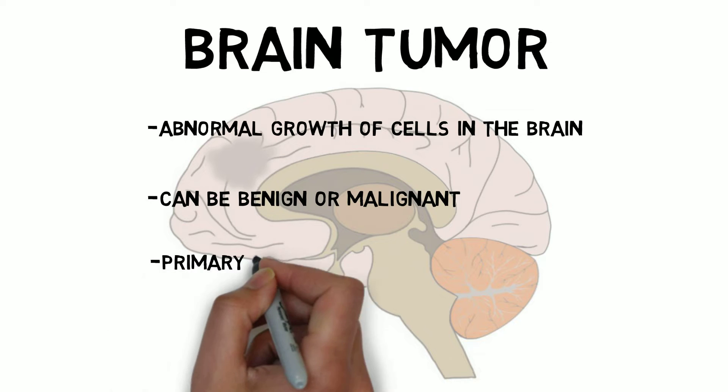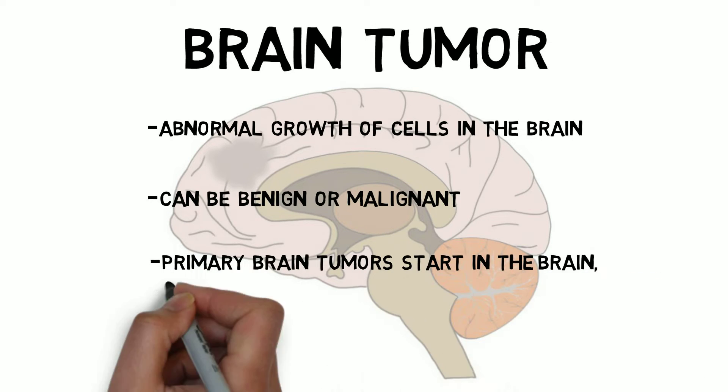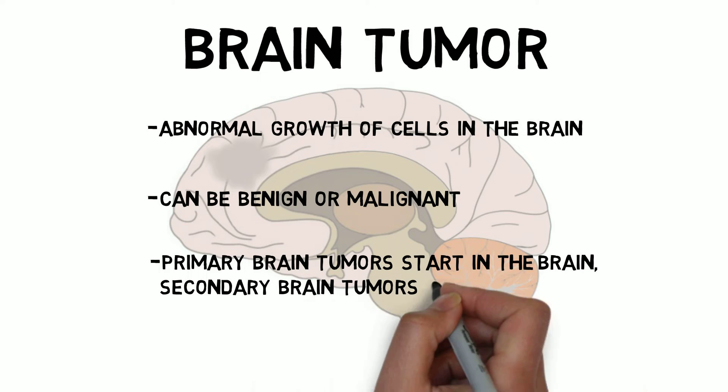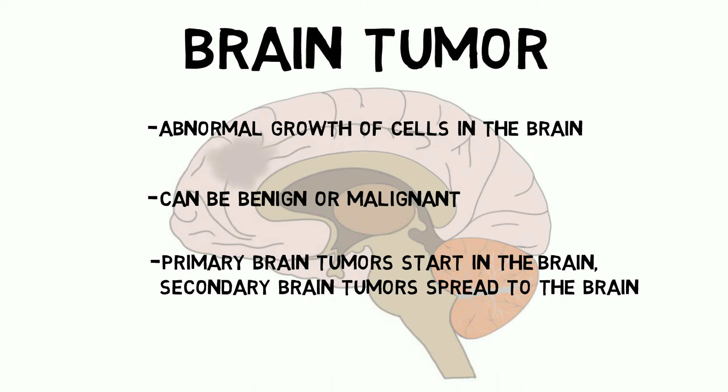If a brain tumor begins in the brain, it's called a primary brain tumor. If it spreads to the brain from some other location, it's known as a secondary brain tumor.